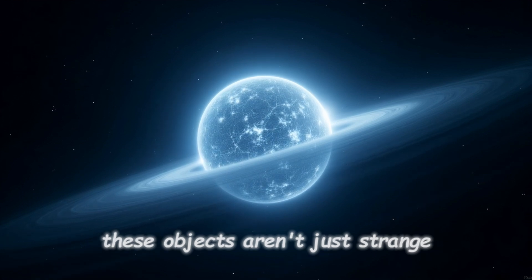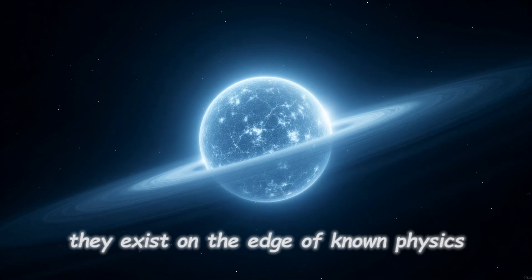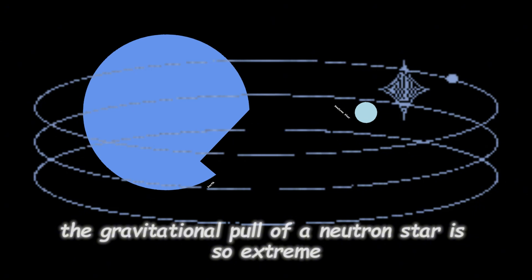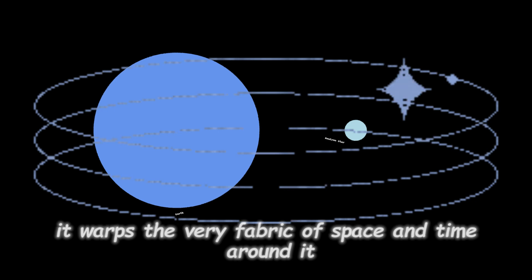These objects aren't just strange. They exist on the edge of known physics. The gravitational pull of a neutron star is so extreme it warps the very fabric of space and time around it.